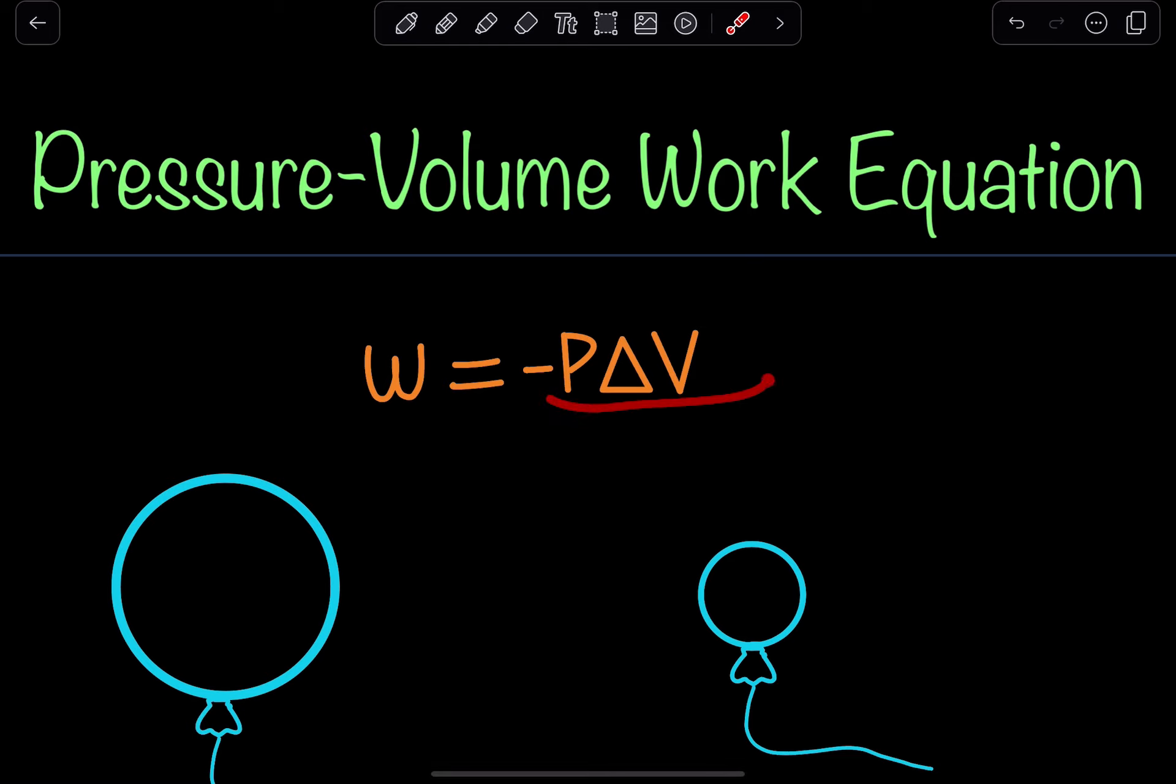When we talk about pressure and volume, we may already be familiar with this concept of how they're related to one another. Essentially, if we increase pressure, we're going to see a decrease in volume. And if we see a decrease in pressure, we're going to see an increase in volume. So they're inversely related to one another.